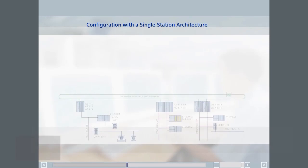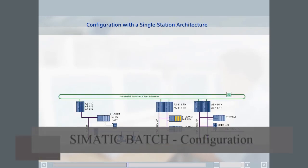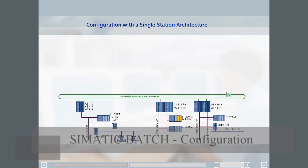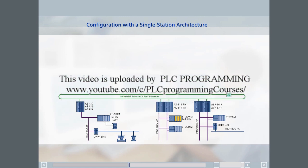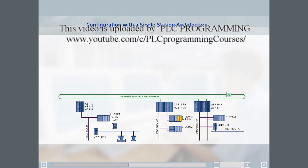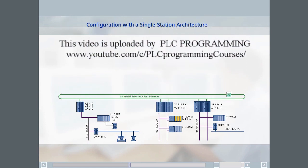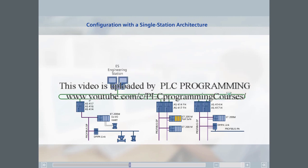In our examples, the automation system will have three automation stations. In some cases, these are redundant, along with devices and remote I/O stations connected to Profibus.